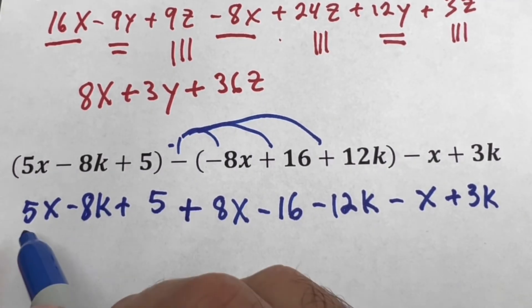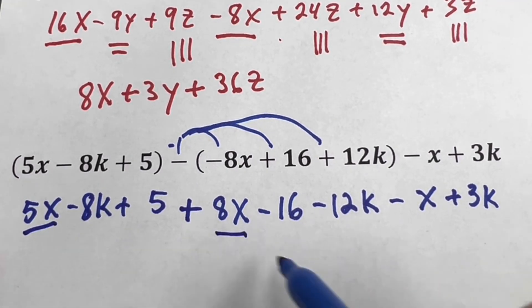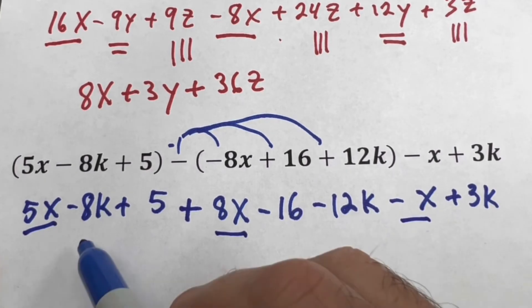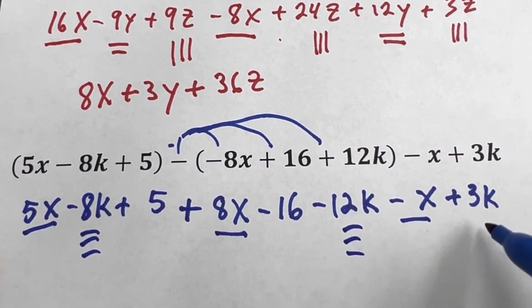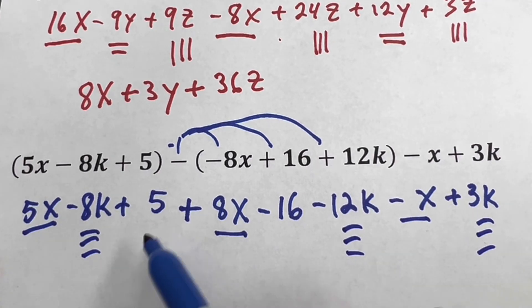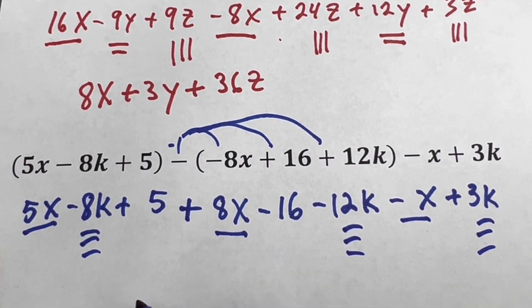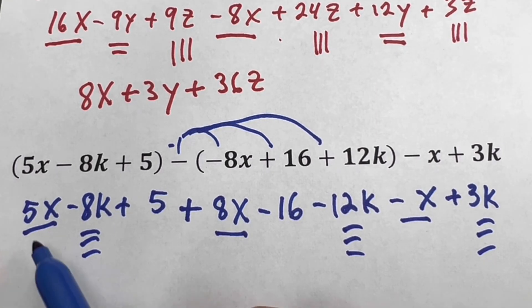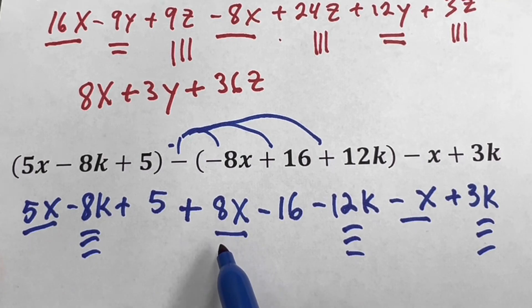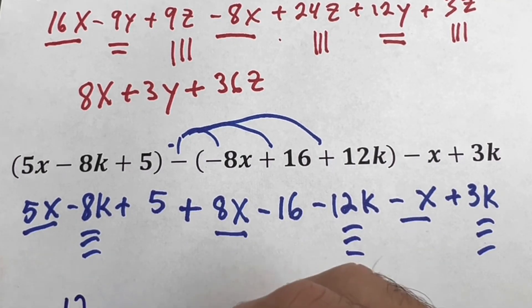Now you do the same, underline like terms. Let's go with the x first: x, x, and x. Then go with k: k and k. If I want, I don't have to underline those two because they are numbers, but if I want to do it, it's up to you. This is just a way to help you organize yourself. So 5x and 8x is 13, minus 1 is 12, so 12x.